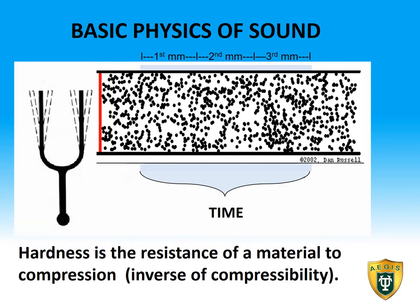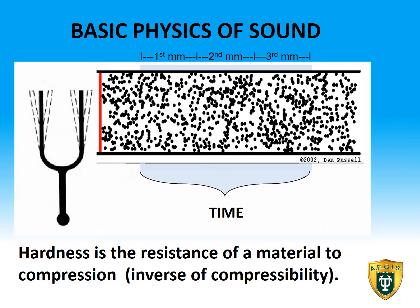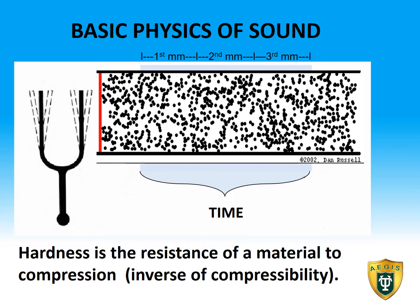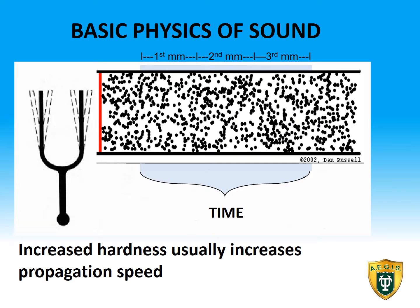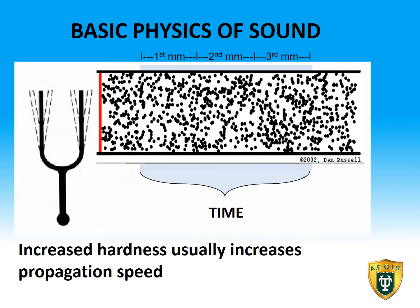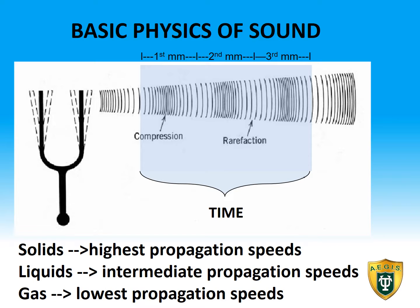Hardness is the resistance of a material to compression and therefore is the inverse of compressibility. Increased hardness usually increases propagation speed. Since hardness usually increases propagation speed, solids usually have the highest propagation speeds, liquids have intermediate propagation speeds, and gases have the lowest propagation speeds.